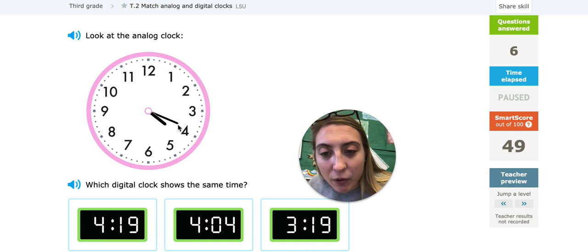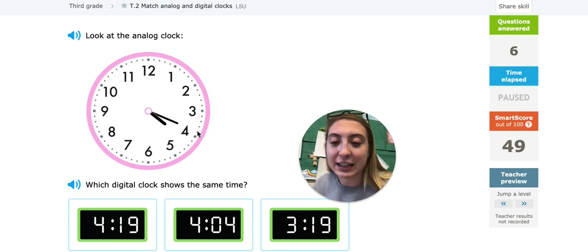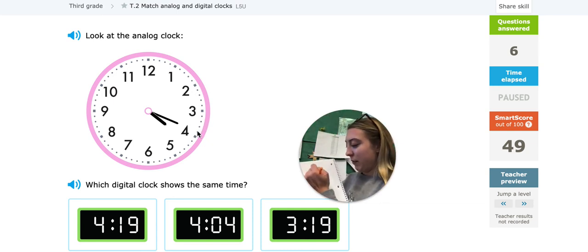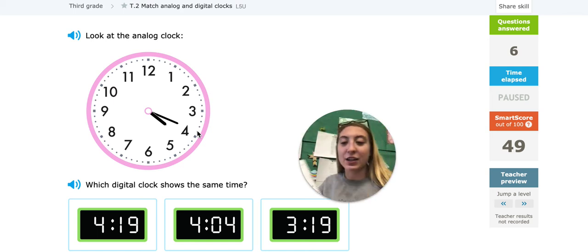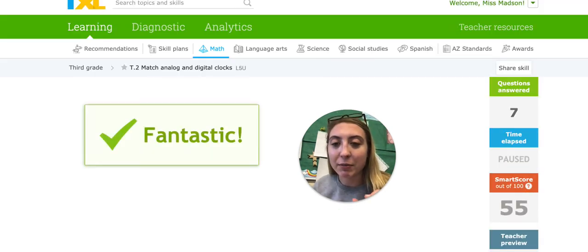So I'm going to count by 5s to my 3: 5, 10, 15. And now I see it's at this one, so I'm going to count up. So, 16, 17, 18, 19. So then I have my 19. So 4:19. Do I have any that match? Yeah. So let's click on it and press submit.